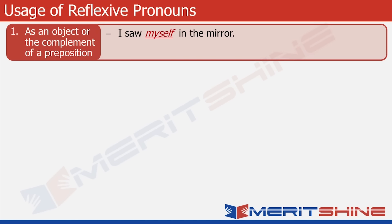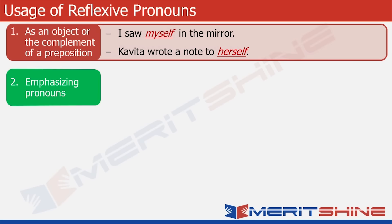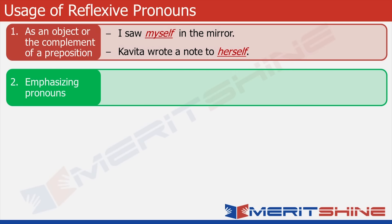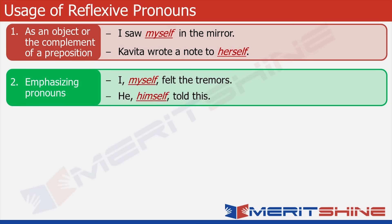I saw myself in the mirror — here 'myself' is an object. Kavita wrote a note to herself, and 'herself' is a complement of the preposition 'to'. Reflexive pronouns are also used as emphasizing pronouns when the subject, that is personal pronouns, are emphasized. For example: I myself felt the tremors. He himself told this.